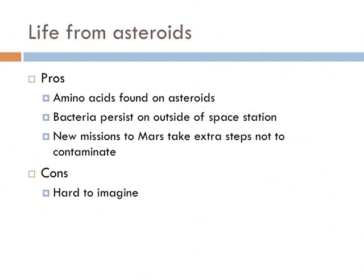Life from asteroids? You've got to be kidding me. Well, it is possible. We've noticed things that suggest it could have happened. We found amino acids on asteroids. It's come to the attention of NASA that bacteria actually persist on the outside of the space station. It was thought nothing could exist in the vacuum of space, but some bacteria can. This is so much of a concern that new missions to Mars take ridiculous steps not to contaminate things sent to Mars. So it's possible for something alive to go through space and hit something else. The cons are, it's kind of hard to imagine.